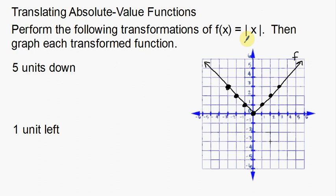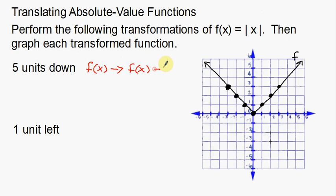Now we're going to take that function and move it up, down, left, and right. The first thing we're going to do is move everything 5 units down. If I move it 5 units down, I take the function and subtract 5 from it. That is moving the function 5 units down.